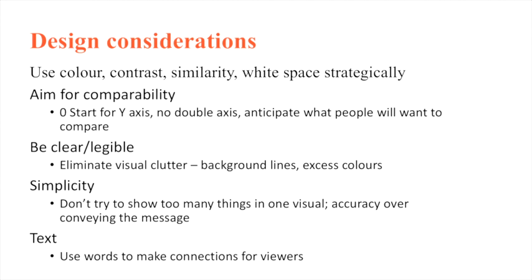Be clear and legible — eliminate visual clutter. That includes background lines, too many colors, things we often see in graphs that actually don't add anything and only take the focus away from the data you want to show. Simplicity: don't try to show too many things in one visual. Someone trying to say five different things means you can't even get one thing across. And text: we think that because information is quantitative, it needs to be conveyed in numbers and graphs. But sometimes annotating your graph with text just makes it easier for the reader to digest and see how it's part of a narrative.